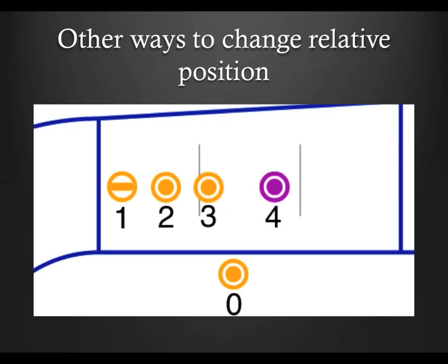There are a few other ways to change relative position as well. One is by knocking the opponent down, and the other is by knocking the opponent out of bounds. In each of these two cases, the position of that opponent has changed to 0, as being down or out of play has no position.